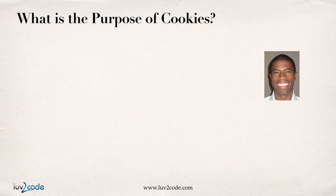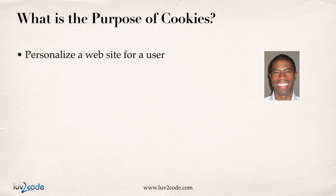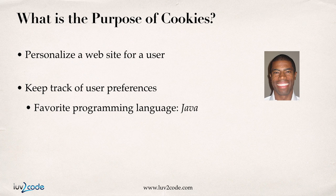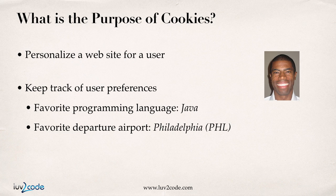So what's the purpose of cookies? Cookies allow you to personalize a website for a user — you can keep track of any user preferences. For example, if you have a news site and the user chose their favorite programming language as Java, you can show them Java news in the future. Or if you have a travel site and they frequently fly from a given airport, you can show them all flights from that airport. It allows you to keep track of long-term preferences for a user even after they close their browser and restart it.